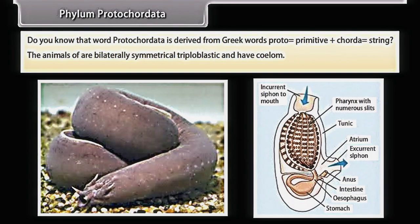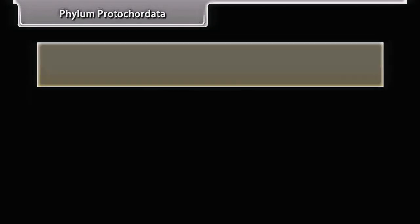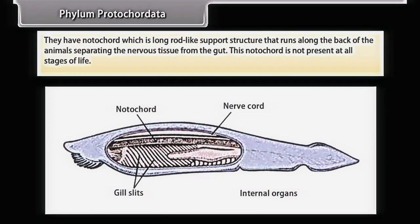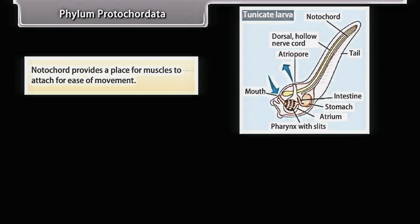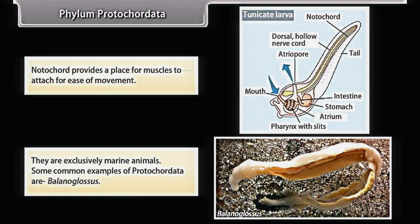The word Protocordata is derived from Greek words 'proto' (primitive) and 'chorda' (string). The animals are bilaterally symmetrical, triploblastic, and have a coelom. They have a notochord — a long rod-like support structure that runs along the back, separating nervous tissue from the gut — though it is not present at all stages of life. They are exclusively marine. A common example is Balanoglossus.